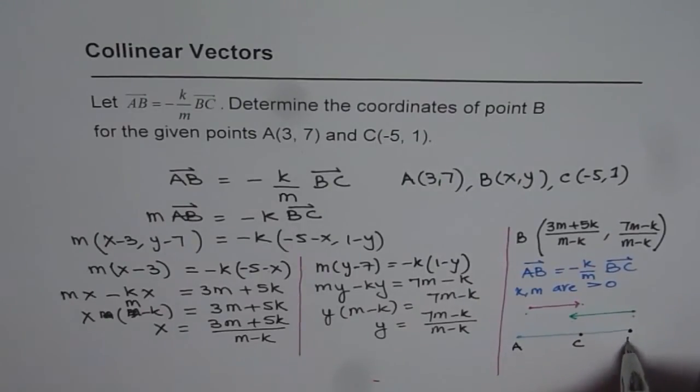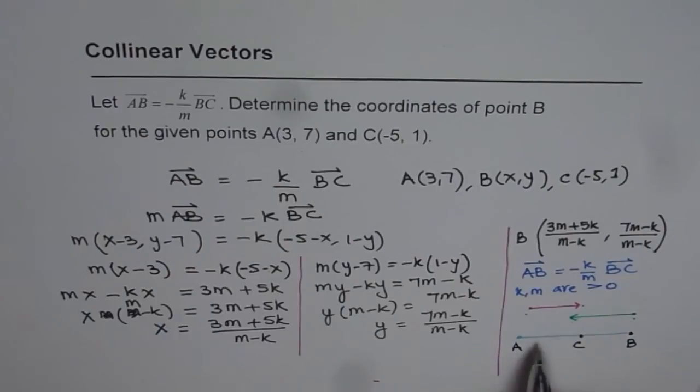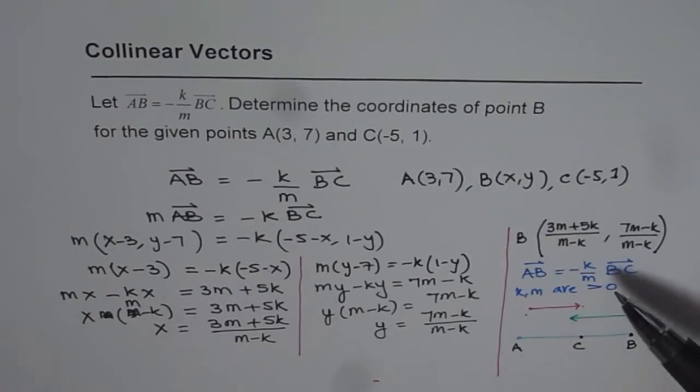It is external division of the line segment AC with point B. And that is the reason why in the denominator we have M minus K term. This is only when both K and M are non-negative.